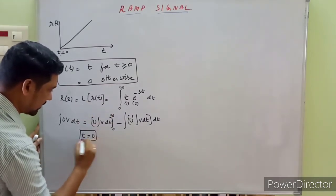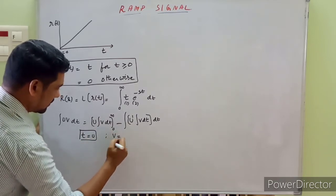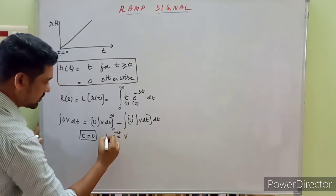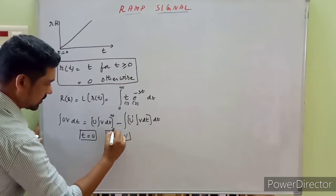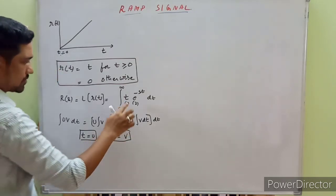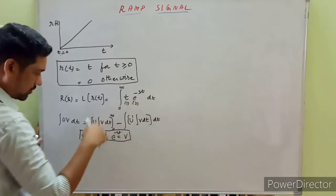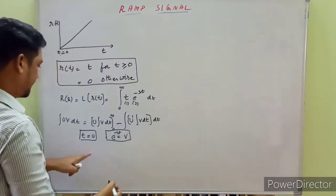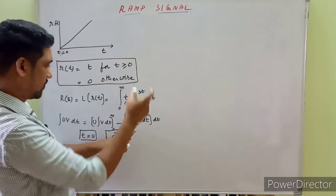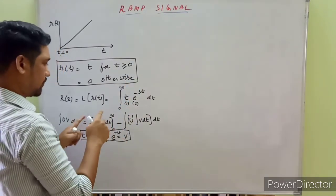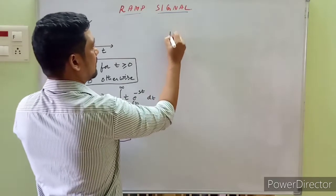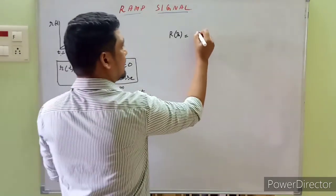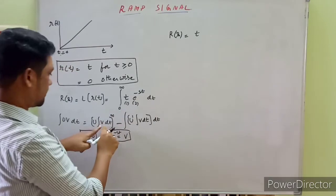In this discussion, let t be our u, and let e raised to minus st be our v. Applying the UV rule, r(s) will be equal to the first function t as it is, multiplied by the integral of the second function.